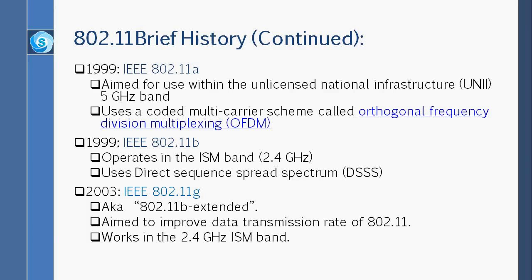The first amendment was IEEE 802.11a in 1999, aimed for use within the 5 gigahertz UNII band, using a coded multi-carrier scheme called Orthogonal Frequency Division Multiplexing — OFDM. I'm not going to go into the details of OFDM; if you're interested, that could be a good entry for your e-portfolio. It is described in detail in the wireless network class anyway.